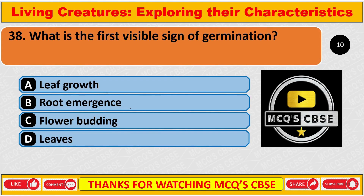What is the first visible sign of germination? The correct answer is B: Root emergence.